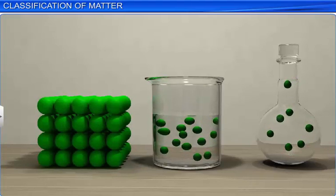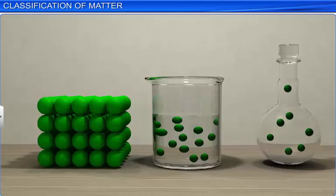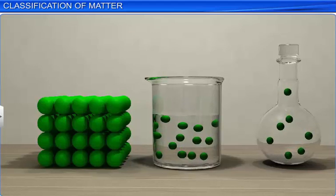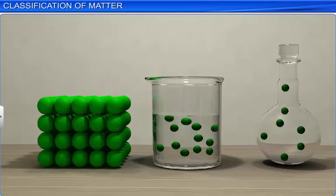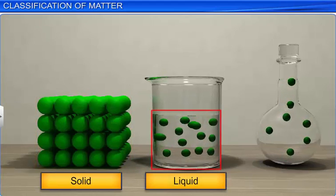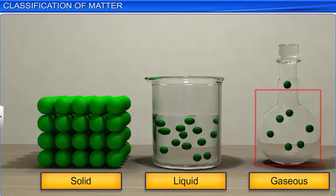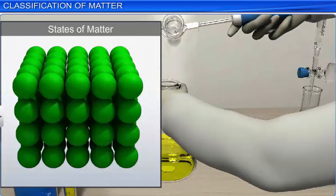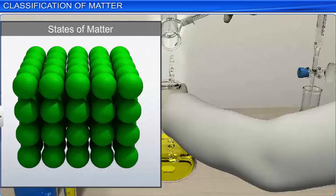Based on the arrangement of the constituent particles, matter can exist in three physical states, solid, liquid, and gaseous. Let's look at the description of each state, along with their characteristics.